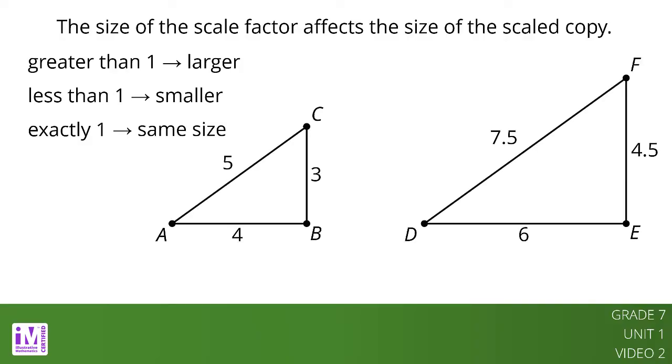For example, triangle DEF is a scaled copy of triangle ABC. Triangle DEF is larger because the scale factor from ABC to DEF is 3 halves, which is greater than 1. Triangle ABC is also a scaled copy of triangle DEF. Triangle ABC is smaller because the scale factor from DEF to ABC is 2 thirds, which is less than 1.